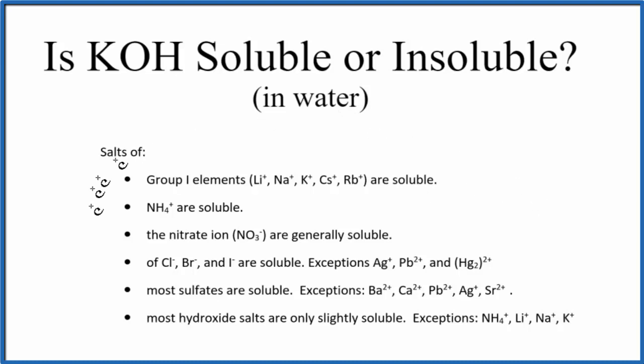First, we can have memorized the solubility rules. These are some of the basic rules for solubility. If we look down, we see that group 1 elements, potassium, that's in group 1 on the periodic table, those elements, when they form compounds, these are going to be soluble compounds. So just looking at the solubility rules, knowing this first rule, we can tell that KOH should be soluble in water.